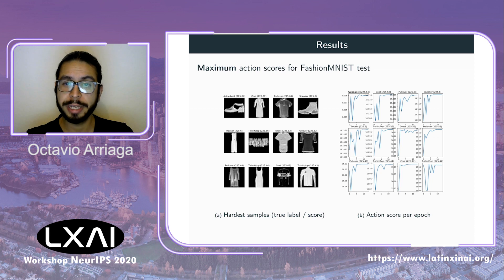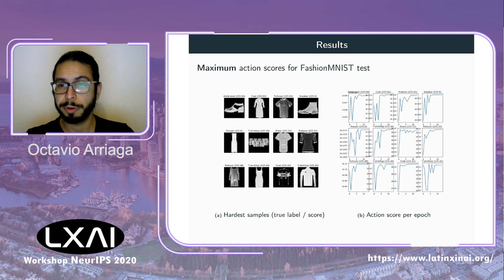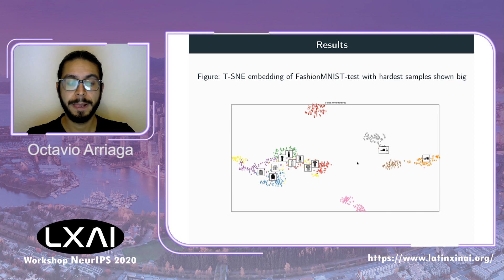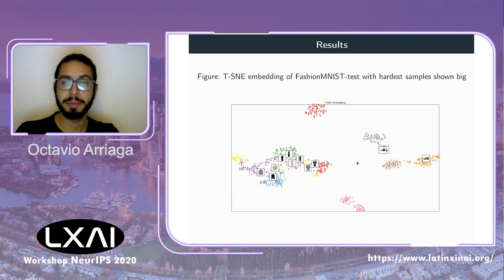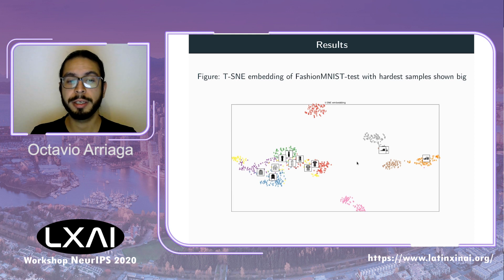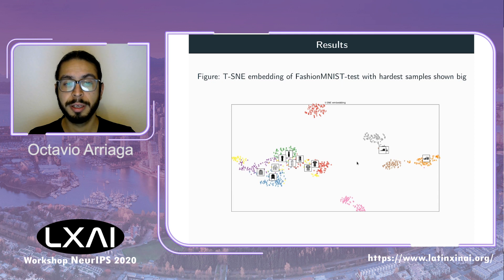We also observe that the neural network has increasing difficulty as it progresses through epochs. We show the t-SNE embedding of the penultimate layer again, where the hardest examples shown in the large images are located between the clusters.